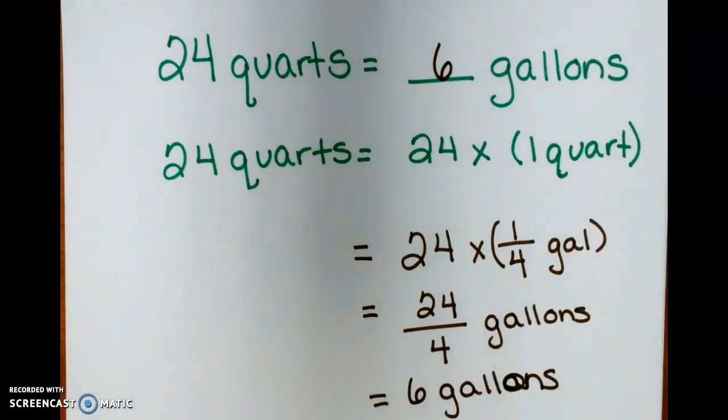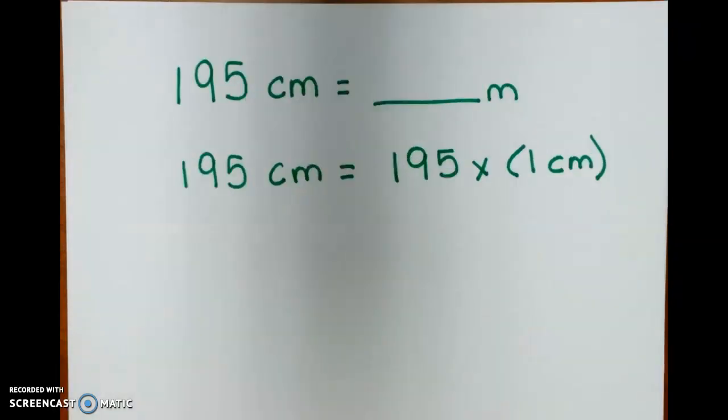So we have 24 quarts equals 6 gallons. This next set of problems is going to be metric units. Don't panic. We can do this.